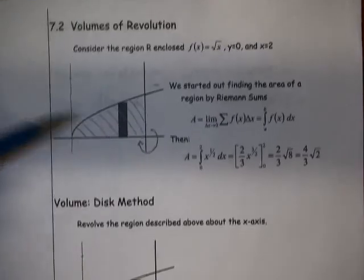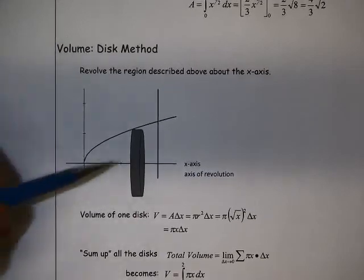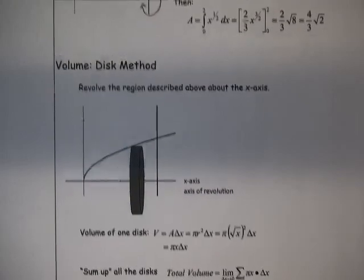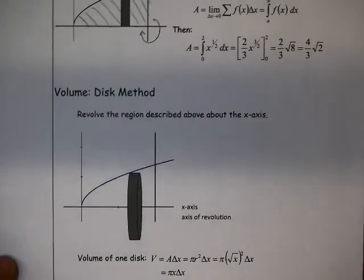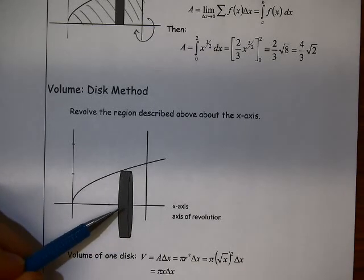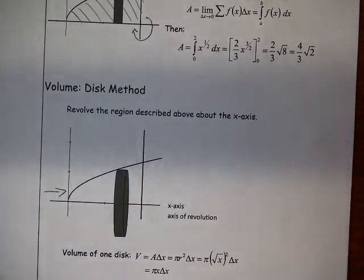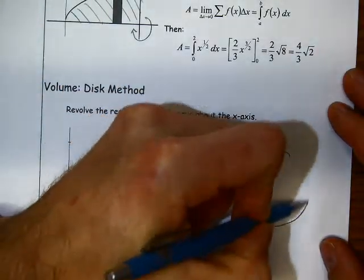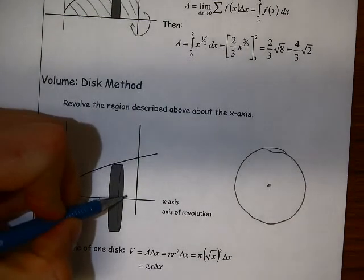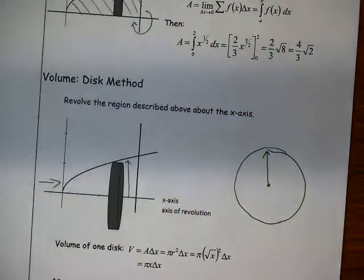Each one of these little slices sweeps out a volume that looks something like this. We get a volume there. But if we were to look at this piece that we just created here, this disk from the side, we would see that we just have a big circle.